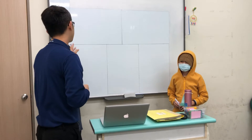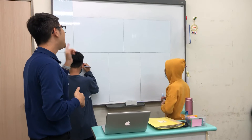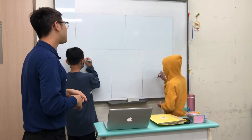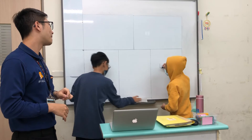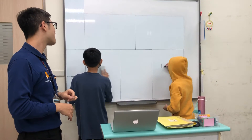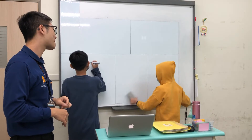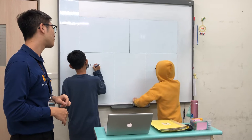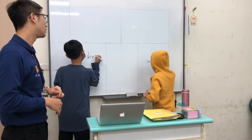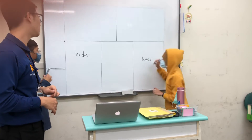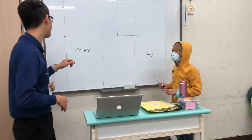現在Google翻譯，如果是一個單字打進去的話，它的系統還不錯，因為它會念慢速給你聽。假設我現在是Google翻譯，Listen——第一步，寫下你聽到的字母。Leader. Leader.